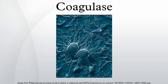Coagulase is a protein enzyme produced by several microorganisms that enables the conversion of fibrinogen to fibrin. In the laboratory, it is used to distinguish between different types of Staphylococcus isolates. Importantly, S. aureus is generally coagulase positive, meaning that coagulase negativity usually excludes S. aureus. However, it is now known that not all S. aureus are coagulase positive. It is also produced by Yersinia pestis.